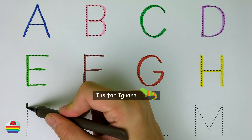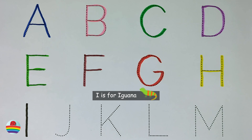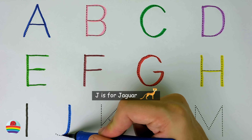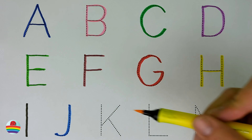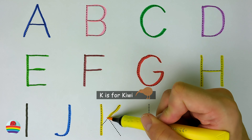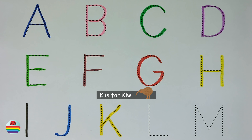I. I is for Iguana. I. J. J is for Jaguar. J. K. K is for Kiwi. K.